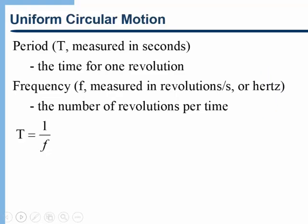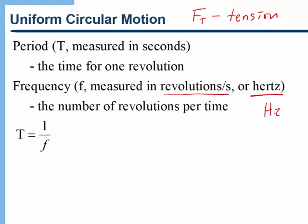Let's define some other terms important for uniform circular motion. The first is the period of the motion — we use capital T to represent the period. By the way, earlier in the course I used F subscript T for tension, reserving capital T for period here. The period is simply the time for the object to go around once — the time for one revolution. Frequency, on the other hand, is the inverse of the period: instead of time per revolution, it's the number of revolutions per time. The unit for frequency is revolutions per second, which is the definition of a hertz.